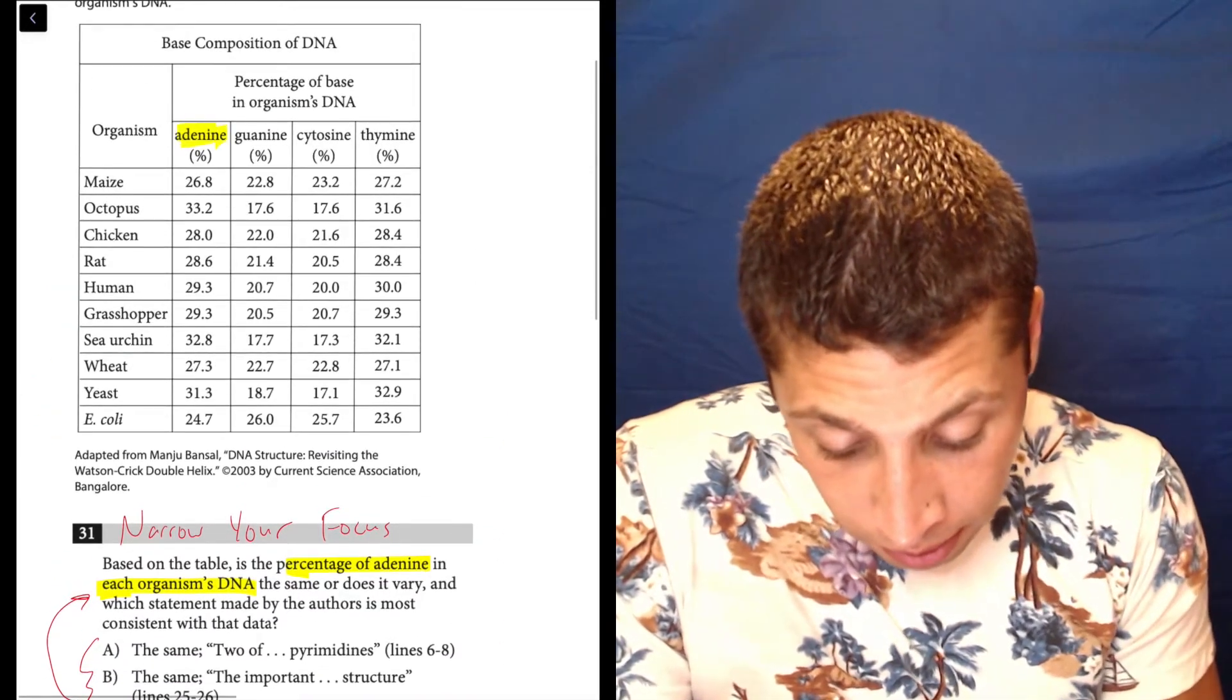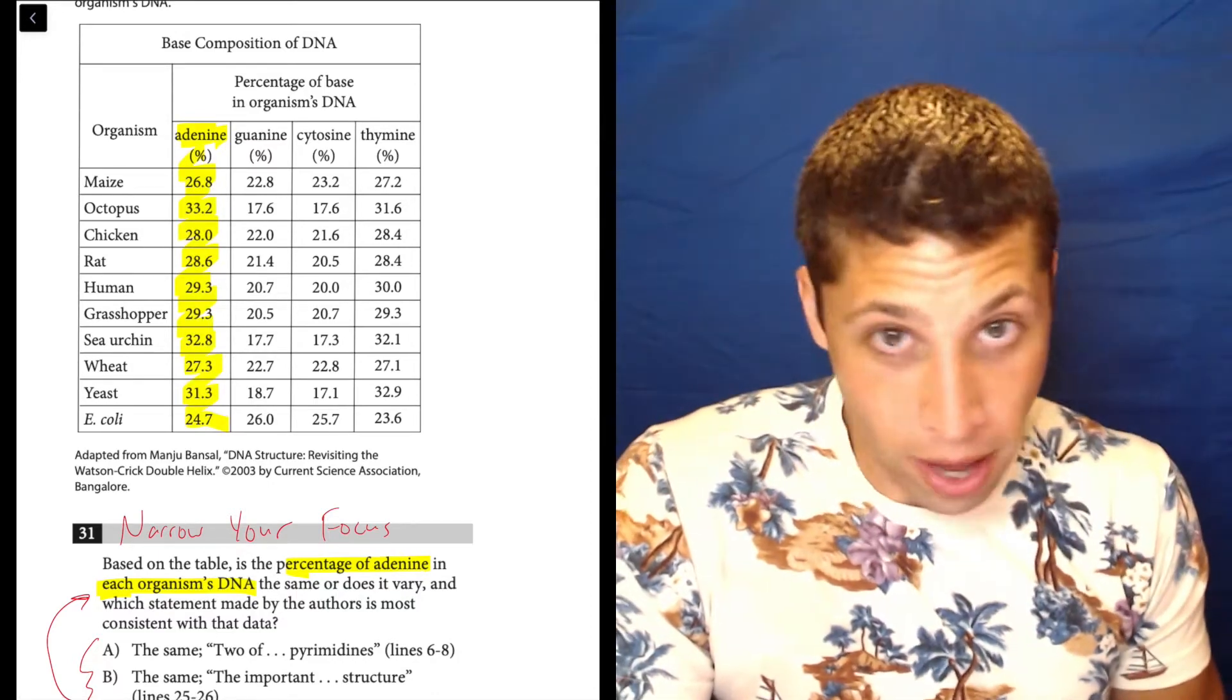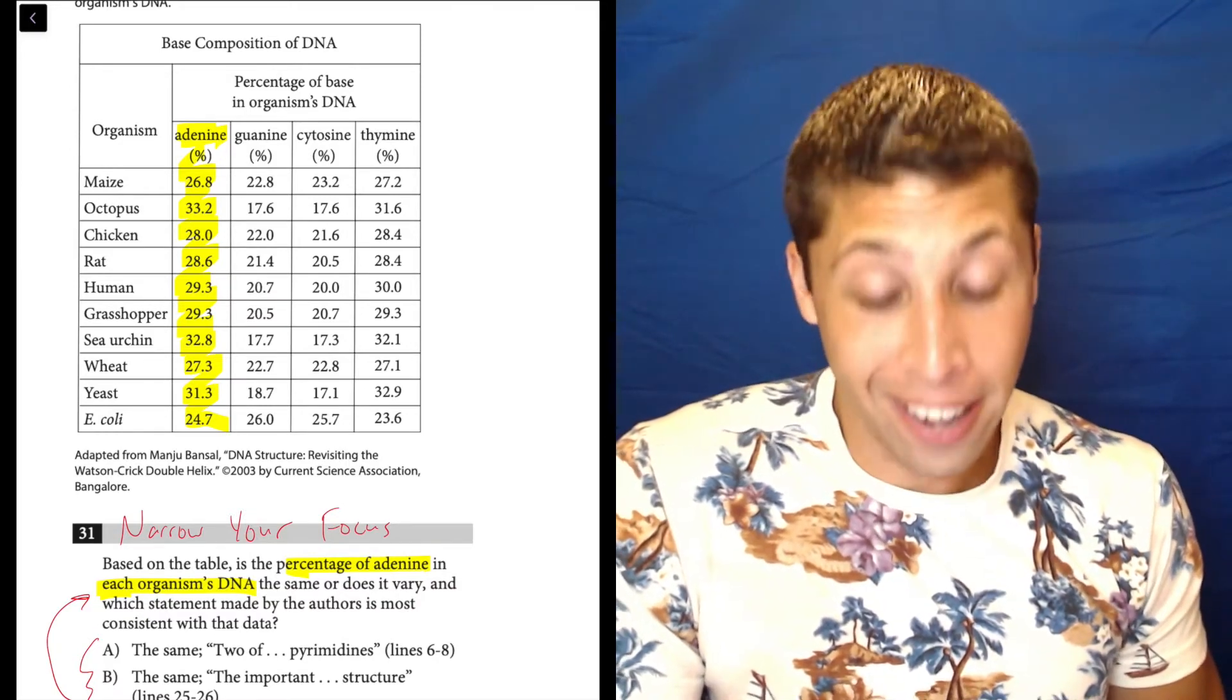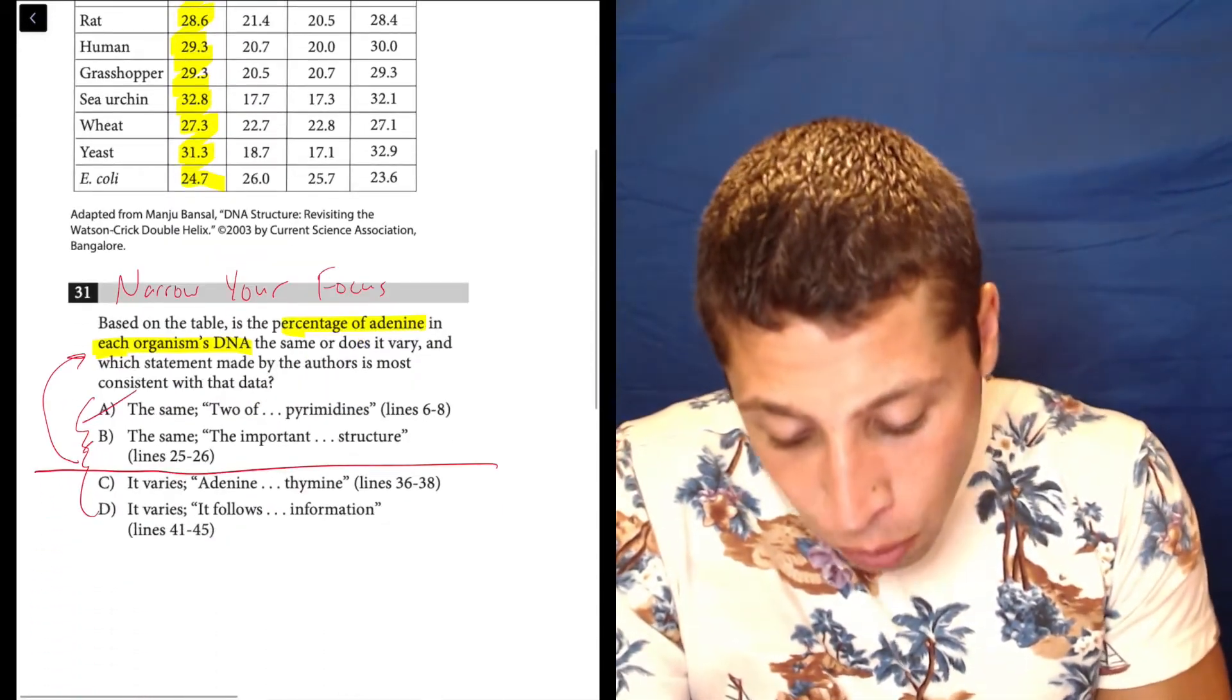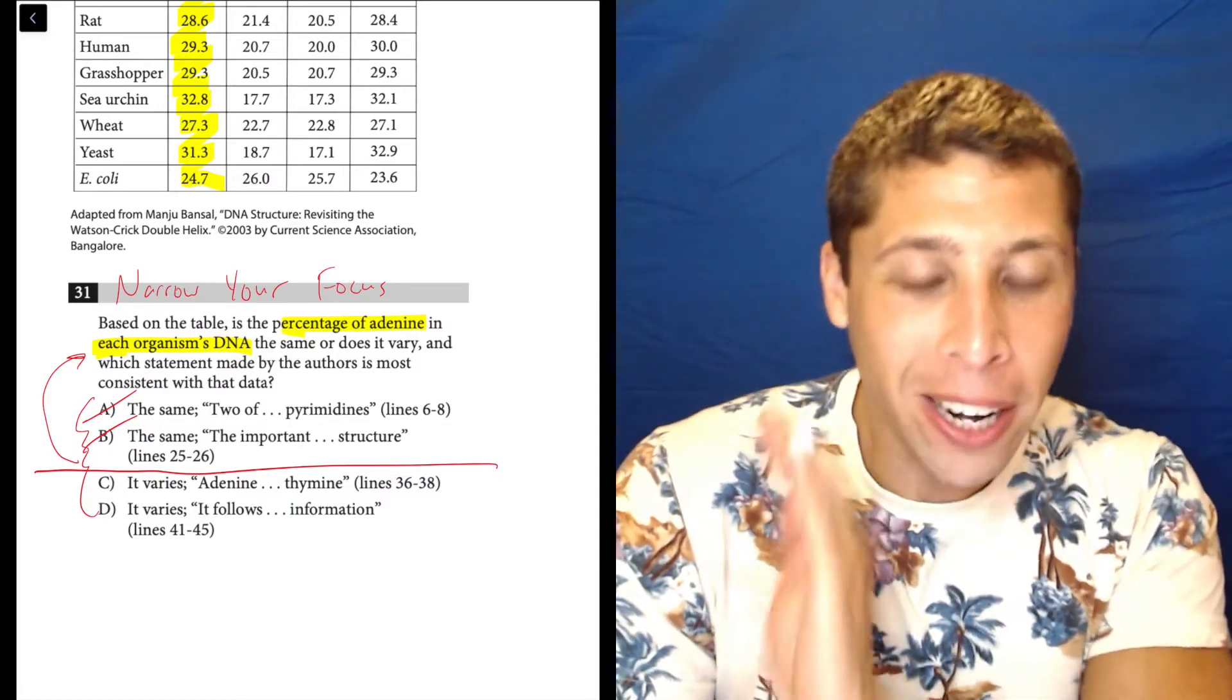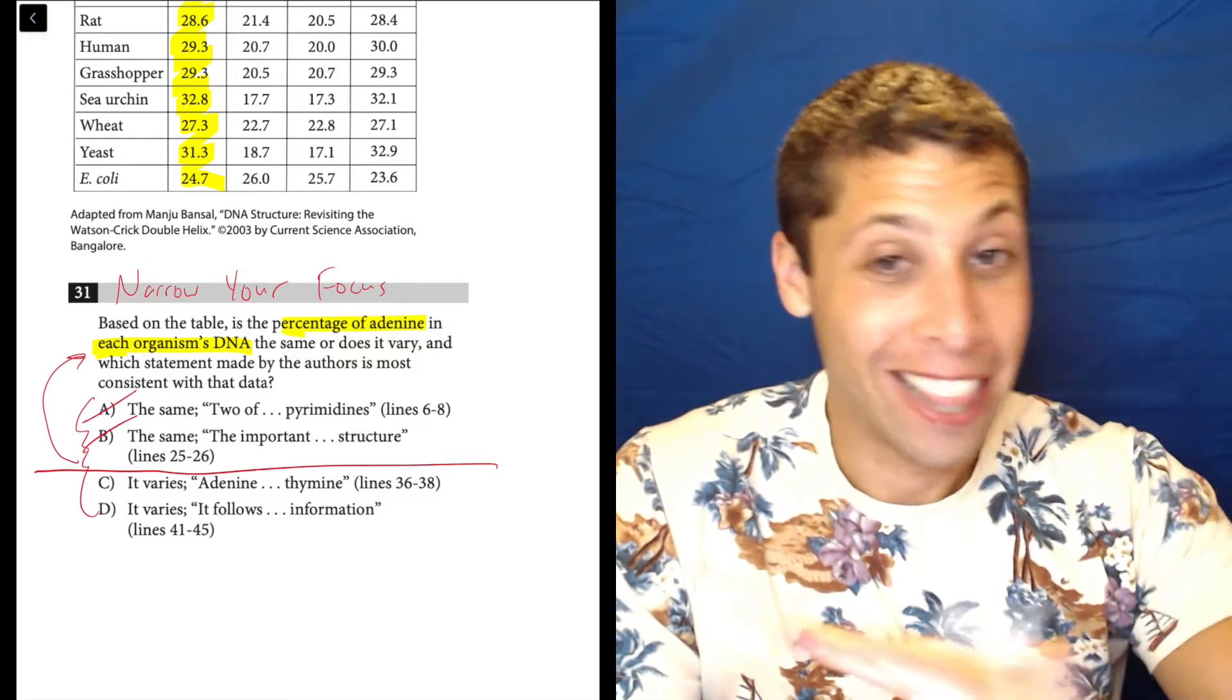Here's adenine. Here's all the organisms. Look at those numbers. Are they the same or do they vary? Well, 26.8 and 33.2 are different numbers. Therefore, it varies. So we can get rid of two choices without even doing anything other than recognizing that two numbers are different. That's it.